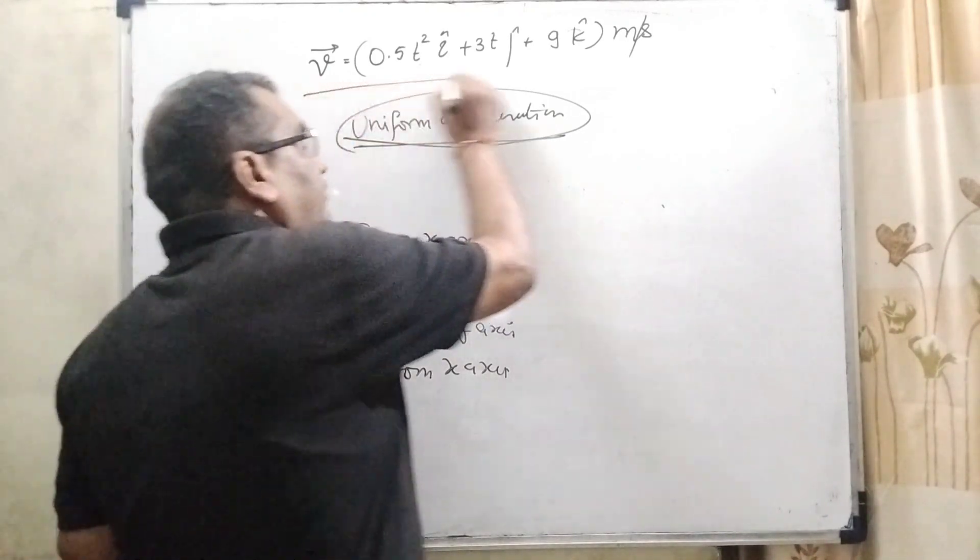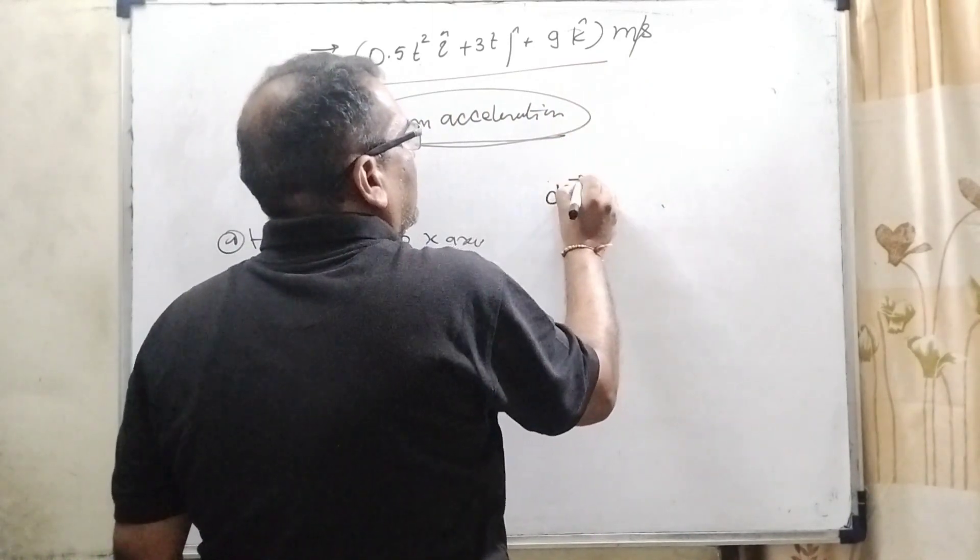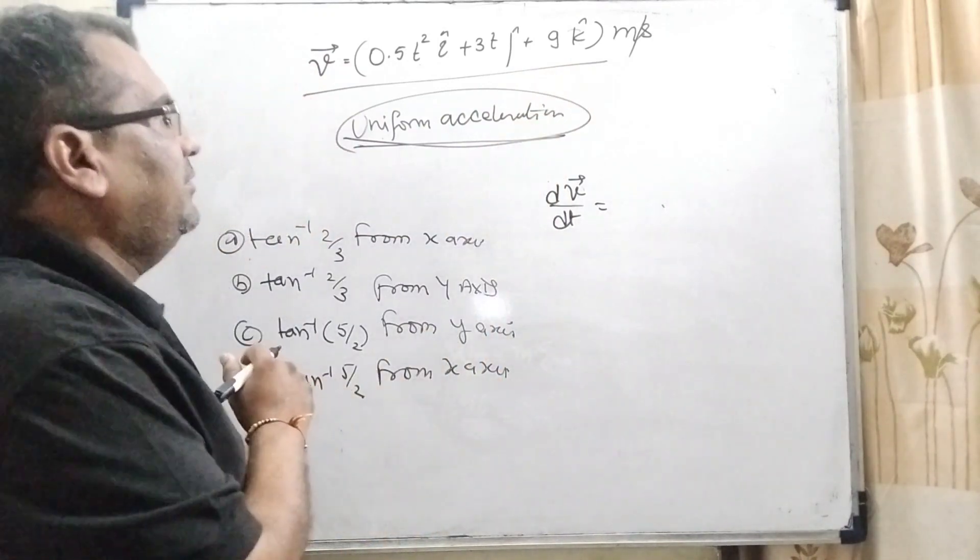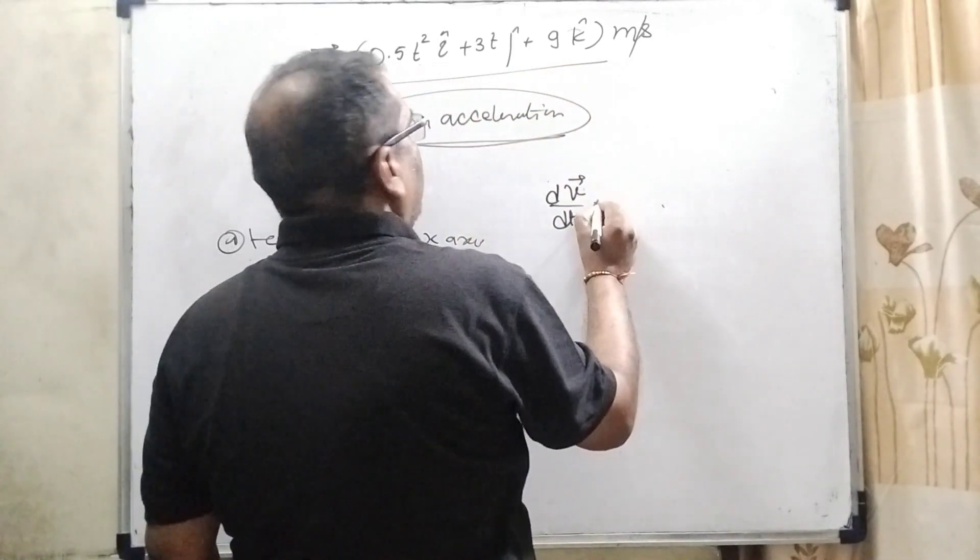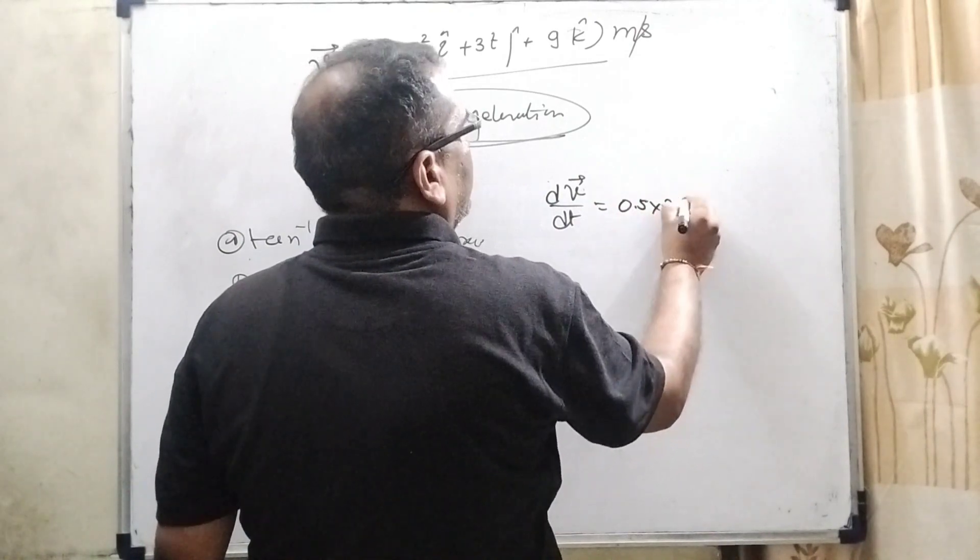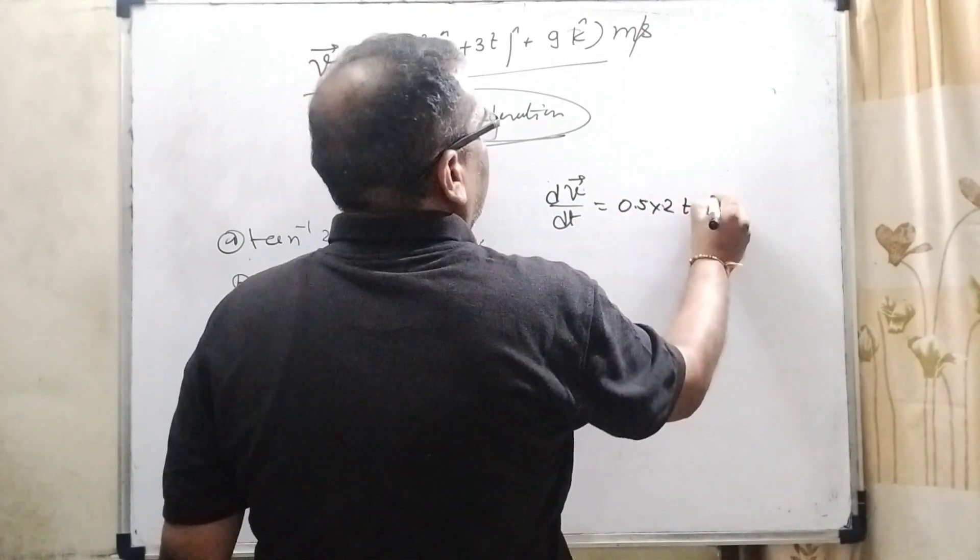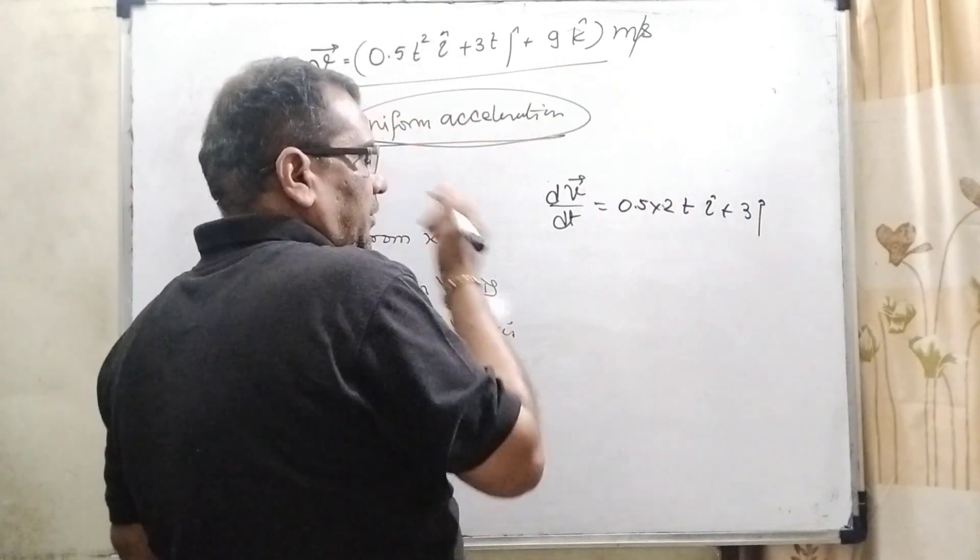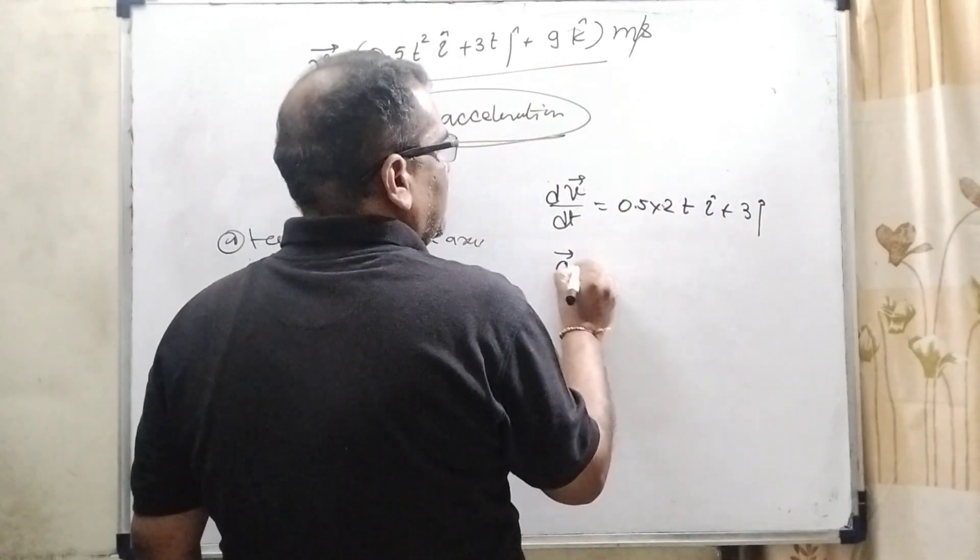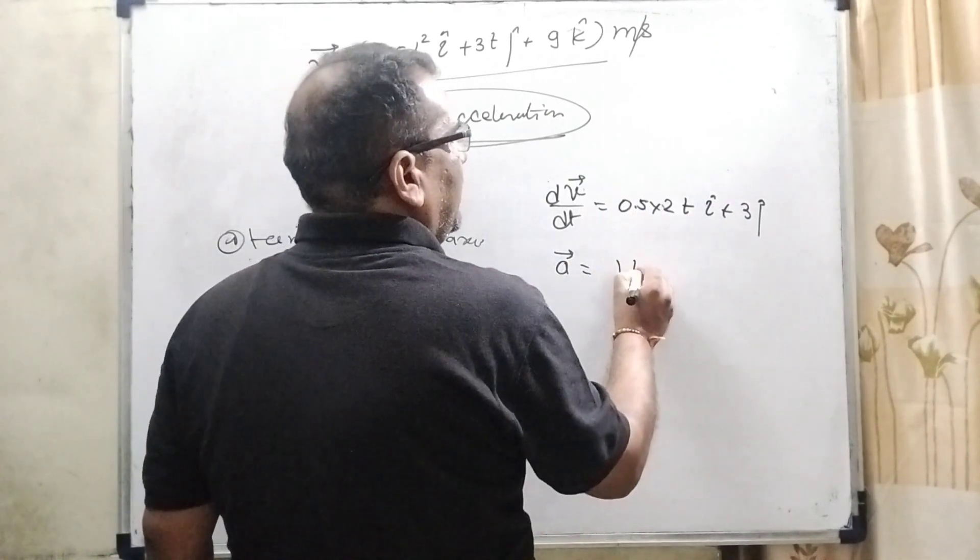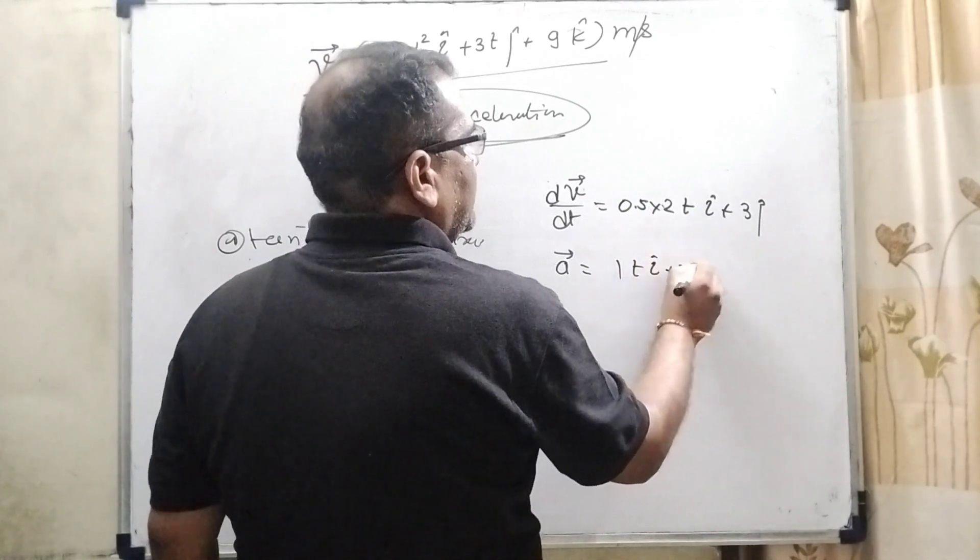Let us first differentiate velocity with respect to time. Now it becomes 0.5 into 2t i plus 3j and this value becomes 0. So here acceleration is equals to 0.5 into 2 that is 1t i plus 3j.